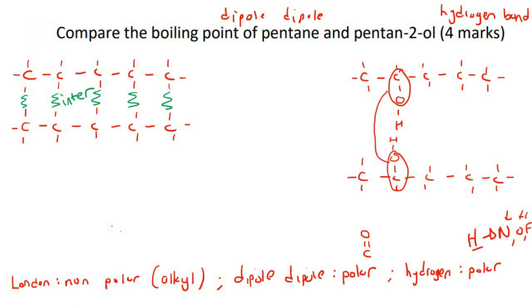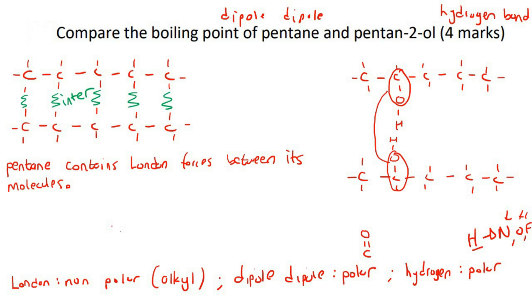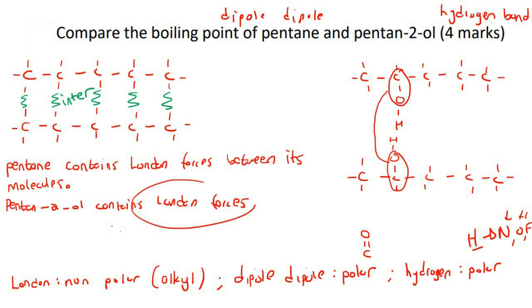So the way we can put this into words for four marks is the following. For step one, you take the first molecule and mention what type of intermolecular forces it has. So you say: 'Pentane contains London forces between its molecules.' Then for step two, you say what the other molecule has - you're not comparing them just yet. Some teachers will only ask you to mention the most dominant, strongest one, but I'm going to give you the whole spectrum.